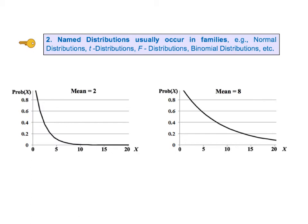Key to understanding number 2. Named distributions usually occur in families. For example, there are normal distributions, t distributions, f distributions, binomial distributions, etc.